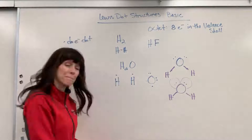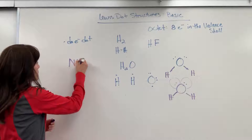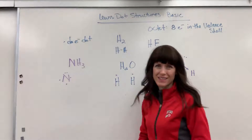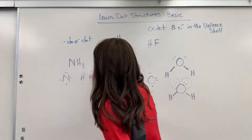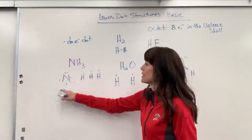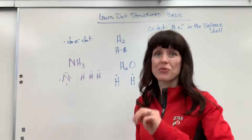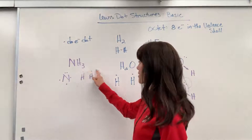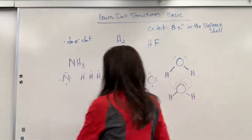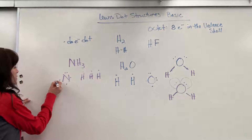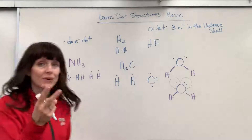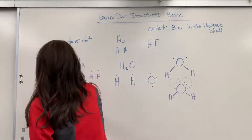Let's do ammonia, NH₃. Nitrogen has five valence electrons: one, two, three, four, five. We've got three hydrogens. Each hydrogen needs one electron to have a full valence shell, and nitrogen has five valence electrons, so it needs three more to have that full octet. There are three unpaired electrons — so one hydrogen is going to come and share with each of those unpaired electrons. I'll do the hydrogens in blue: this hydrogen shares an electron, the next hydrogen shares an electron, and the last hydrogen shares an electron. Two electrons make a bond, so I have a bond between each hydrogen and the nitrogen.